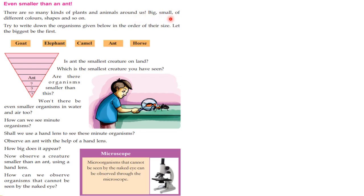Big, small, of different colors, shapes and so on. Try to write down the organisms given below in the order of their size. Let the biggest be the first.